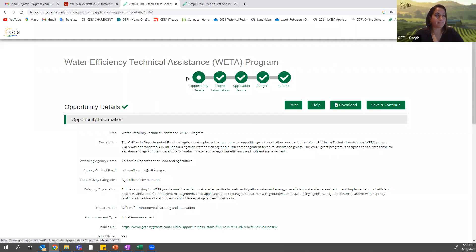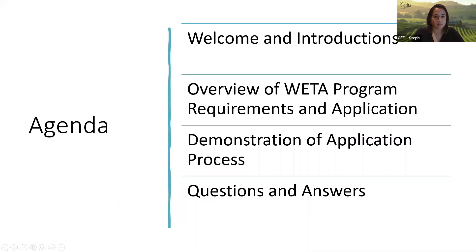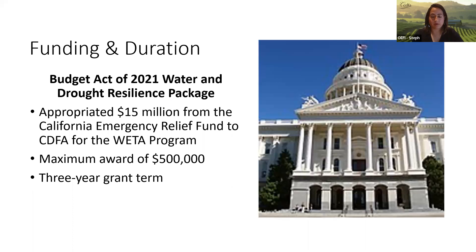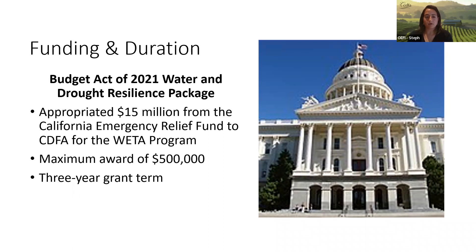If you have questions about the application process, just hold off until we get to that point. The water program is still a relatively new program — it's in its second year. Last year we received a one-time funding allocation of $5 million dedicated to water efficiency and nutrient management technical assistance. This year we've been appropriated $15 million from the California Emergency Relief Fund for grant awards. The maximum award amount is $500,000, and it's for a three-year grant term. The program is designed to facilitate technical assistance to agriculture operations for on-farm water and energy use efficiency and nutrient management.